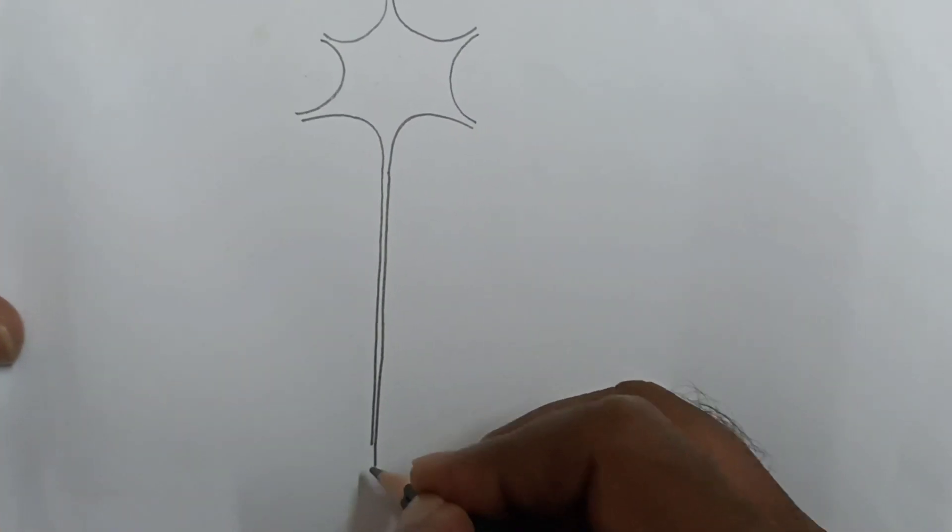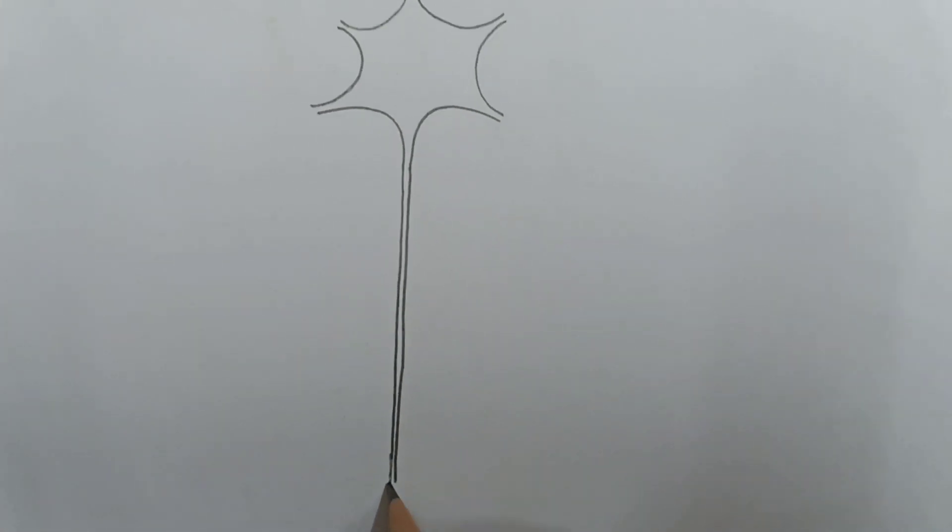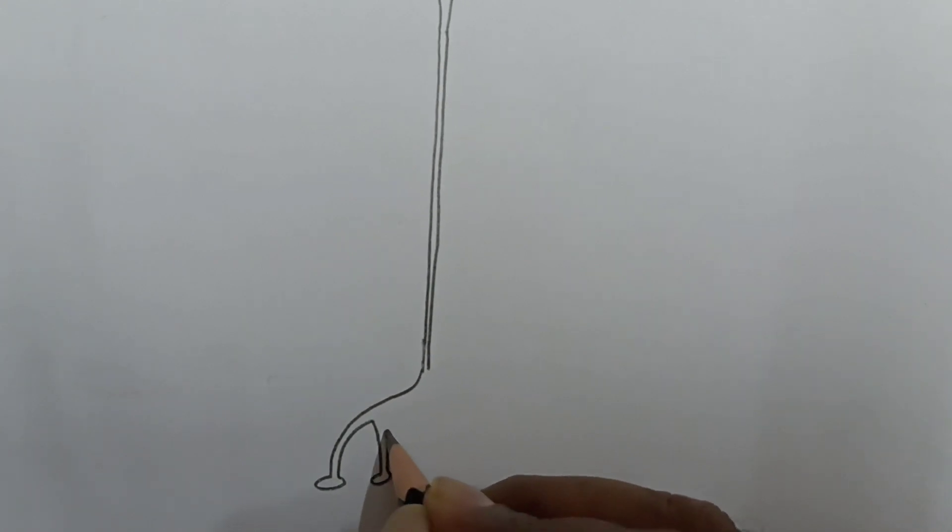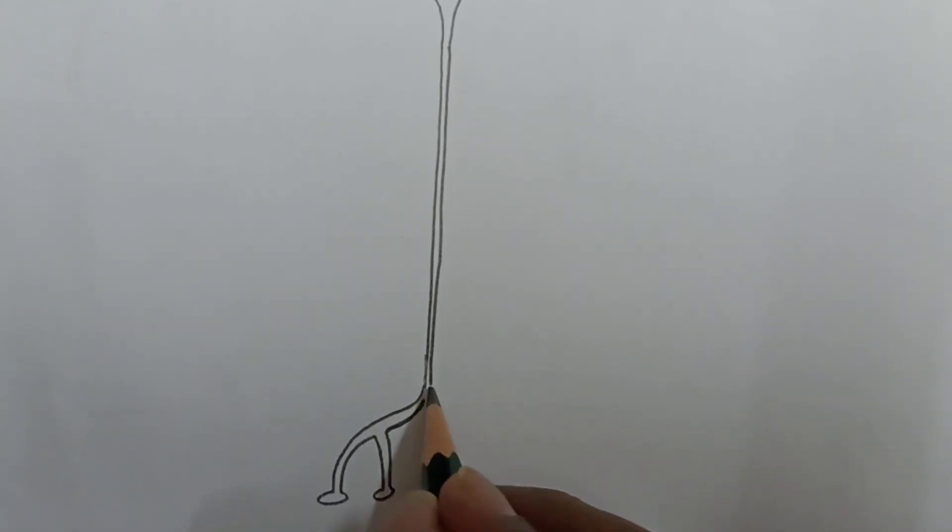Like this, this is axon. Okay, now I am drawing axon terminals and synaptic knobs. You draw like this.